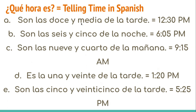Son las doce y media de la tarde: 12:30 p.m., or in the afternoon. Son las seis y cinco de la noche: 6:05 p.m., or in the evening. Son las nueve y cuarto de la mañana — remembering that cuarto is a quarter, 15 minutes, a quarter of an hour — 9:15 a.m.